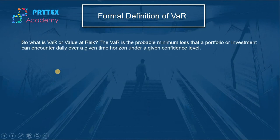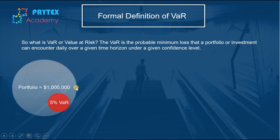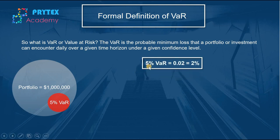The formal definition: value at risk, or VaR, is the probable minimum loss that a portfolio or investment can encounter daily over a given time horizon under a given confidence level. For example, suppose a portfolio manager manages a fund worth 1 million USD and calculates the 5% VaR to be 0.02, or 2%.